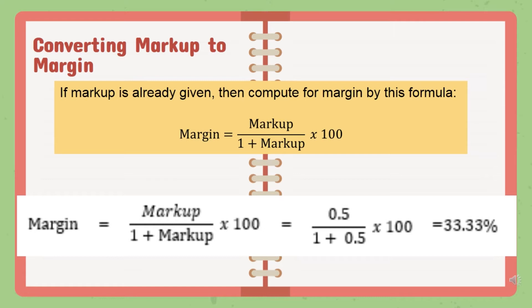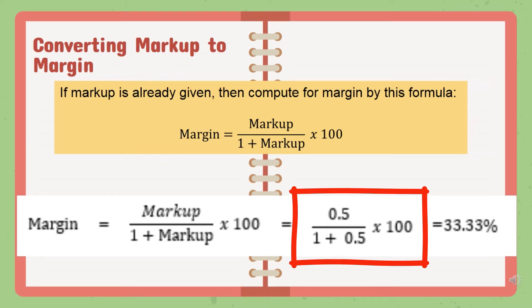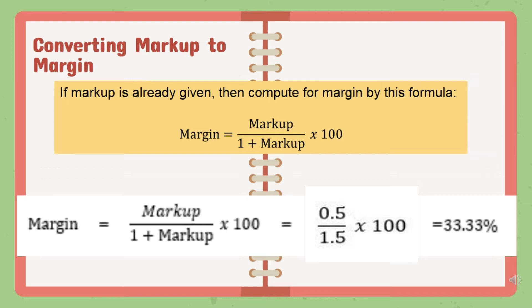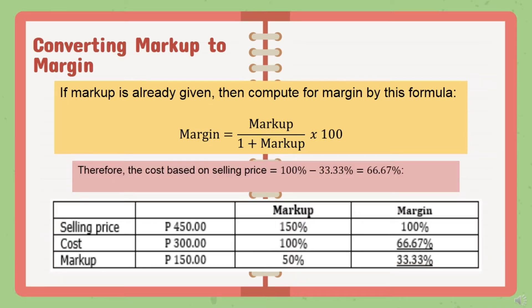If your markup is 50% based on cost, convert 50% to decimal by moving the decimal point twice to the left, giving 0.5. Substitute into the formula: margin = 0.5 / (1 + 0.5) × 100 = 0.5 / 1.5 × 100 = 33.33%. So from a markup of 50% (based on cost), the margin — which is markup based on selling price — is 33.33%. The margin is always less than the markup because margin is based on selling price while markup is based on cost.